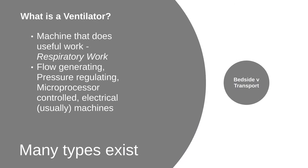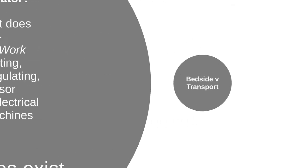So without further ado, let's start off with the lecture. So what is a ventilator? A ventilator is a machine that does useful work. It's a flow-generating, pressure-regulated, microprocessor-controlled, usually electrical machine. Many types of ventilators exist.